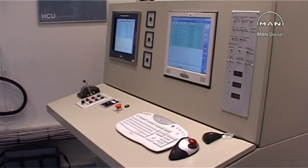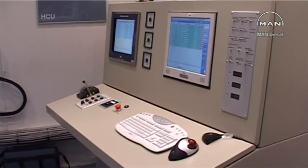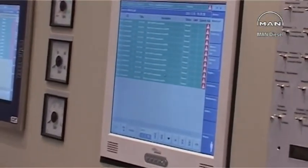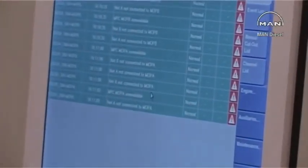The alarm list in the MOP panel provides detailed information which assists the engineer in tracing and remedying any abnormal conditions in the ME control system.